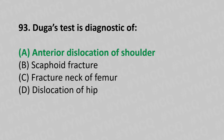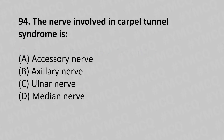Moving to our 94th question. The nerve involved in carpal tunnel syndrome is: option A accessory nerve, option B axillary nerve, option C ulnar nerve, option D median nerve. The answer is option D, median nerve.